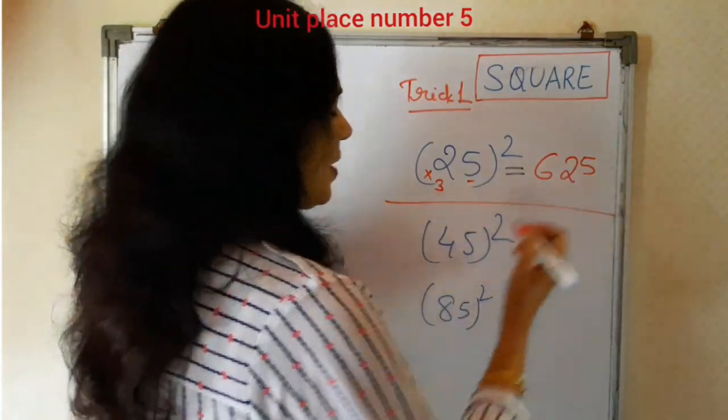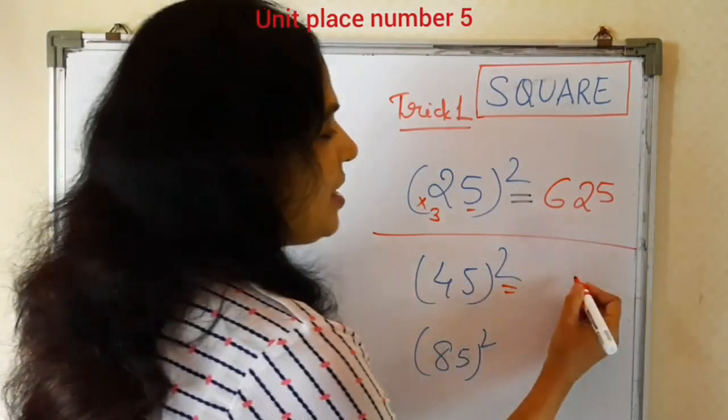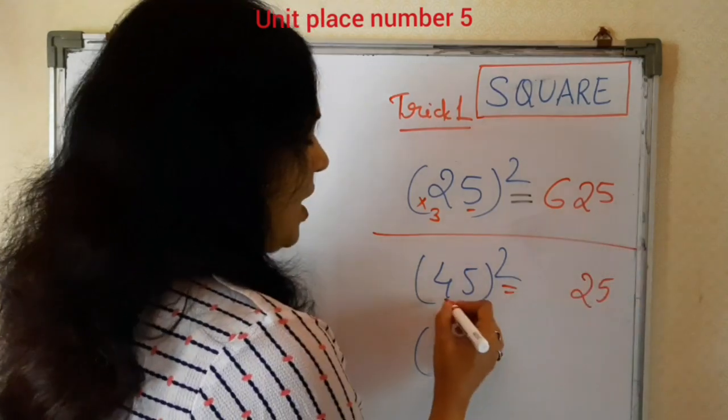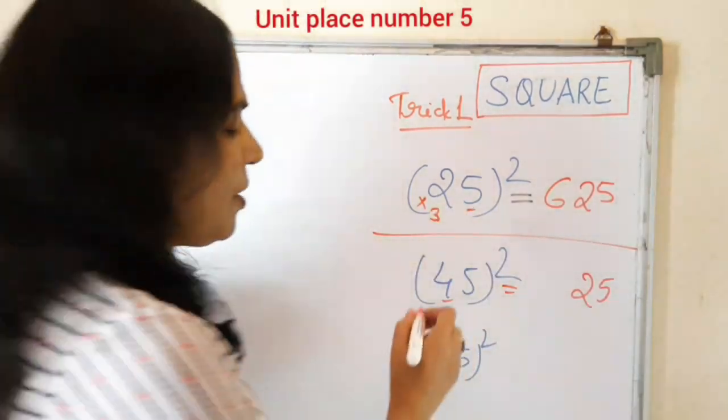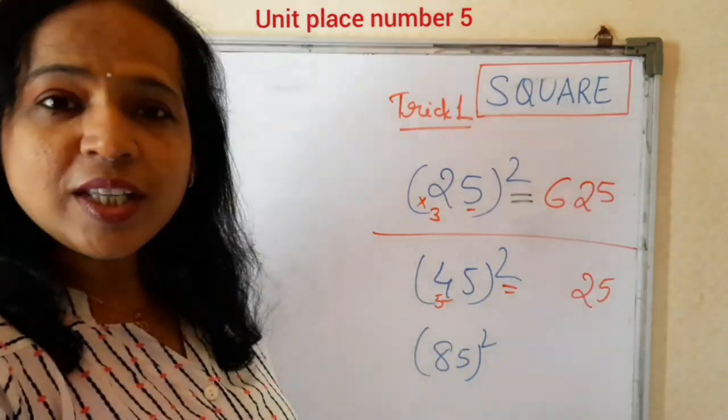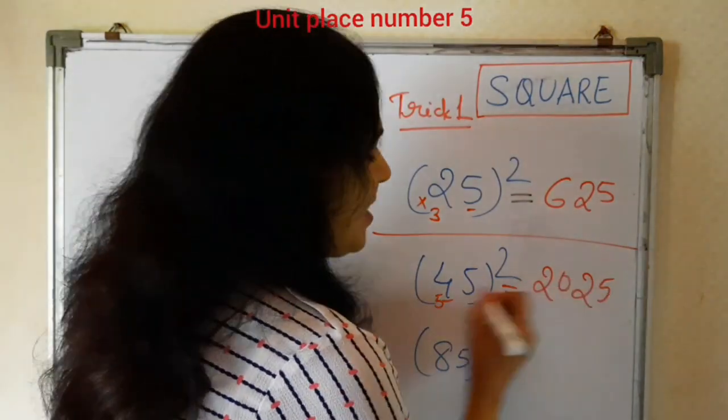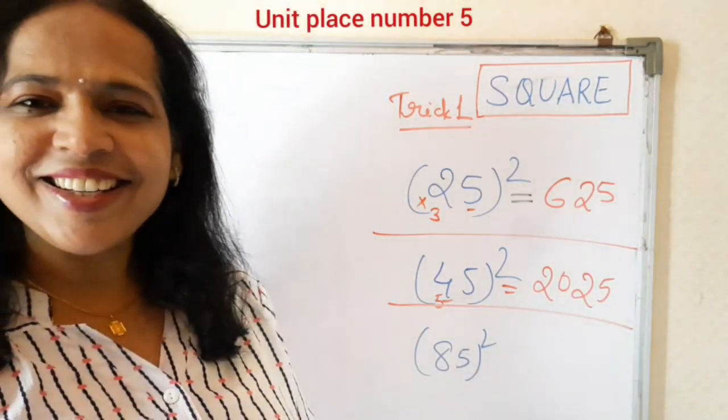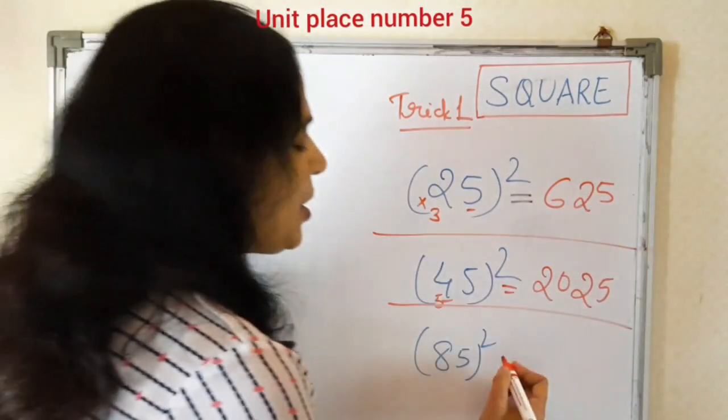Take the next example. 5 square is 25. Then 4 next number is 5. 5 for the 20. This is our answer. Isn't it easy? You can do it within 2 seconds.